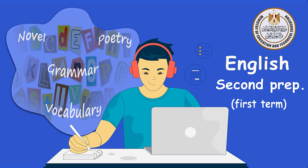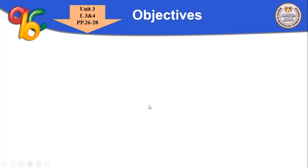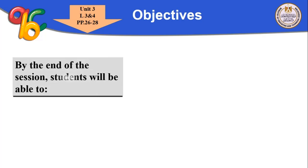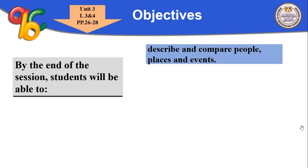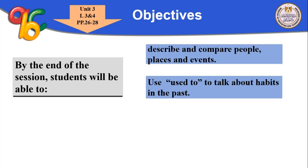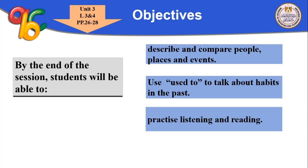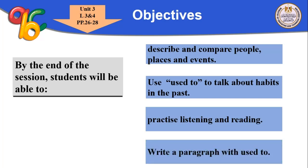My dear students, welcome to our lesson today. With Unit 3 today, we will speak about some objectives. For lessons three and four, by the end of the session, students will be able to: describe and compare people, places and events; use 'used to' to talk about habits in the past; practice listening and reading; and write a paragraph using 'used to'.